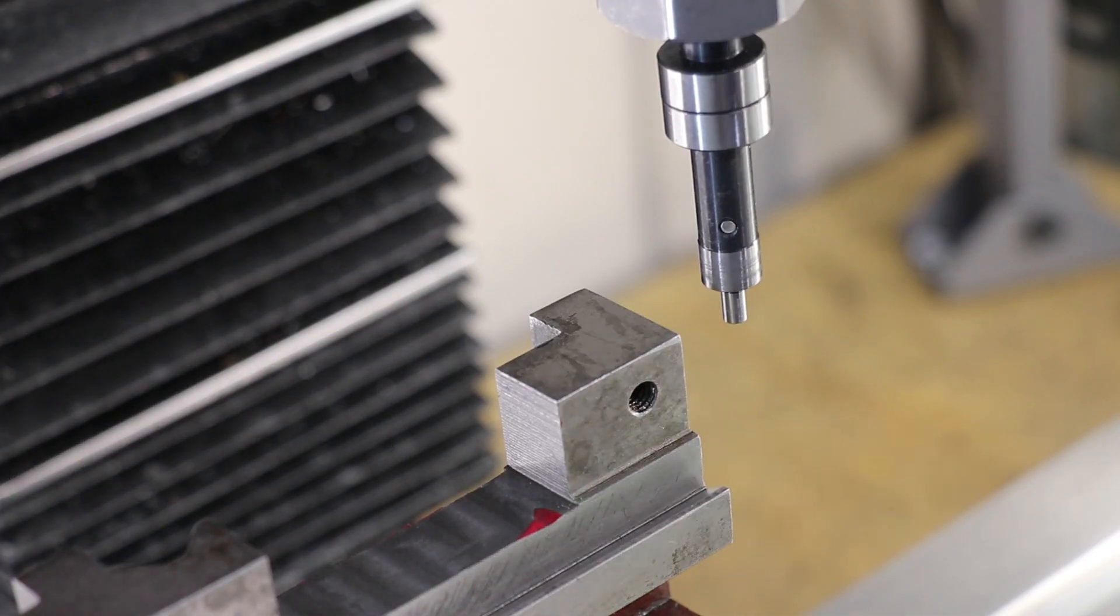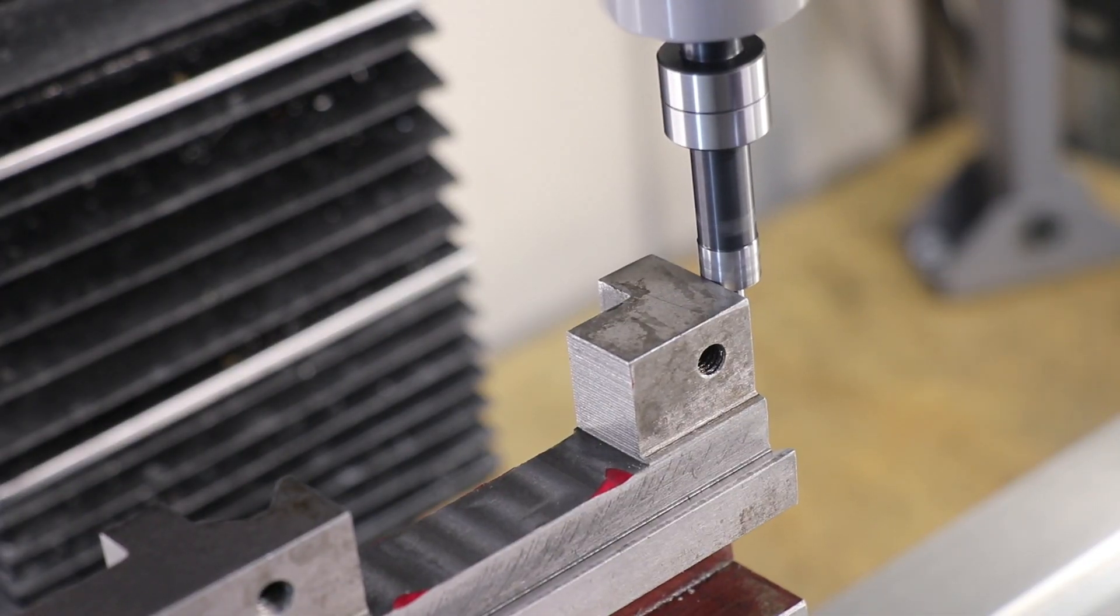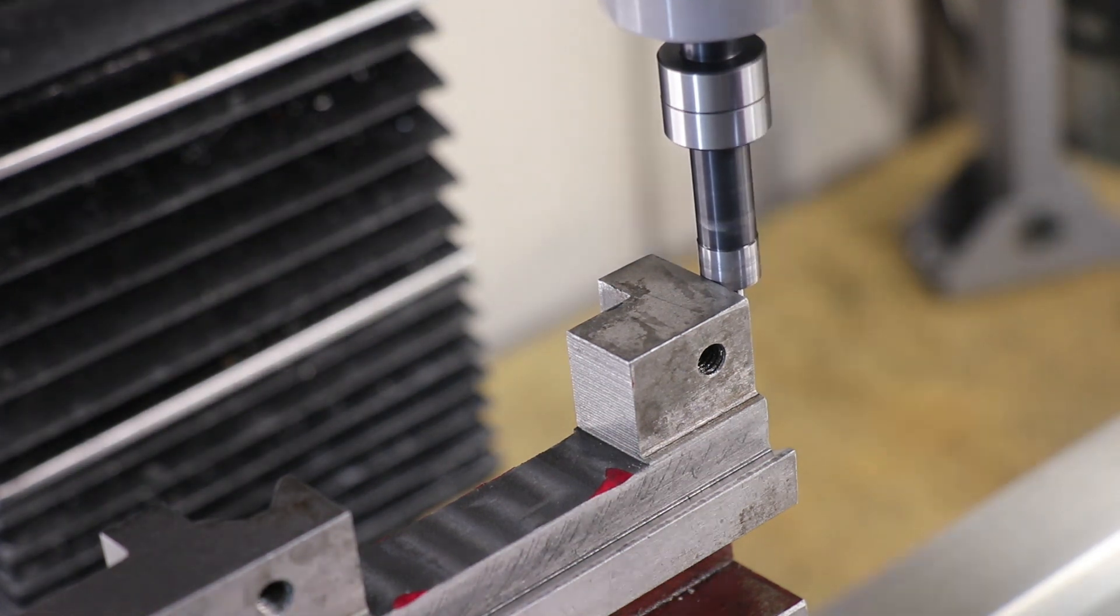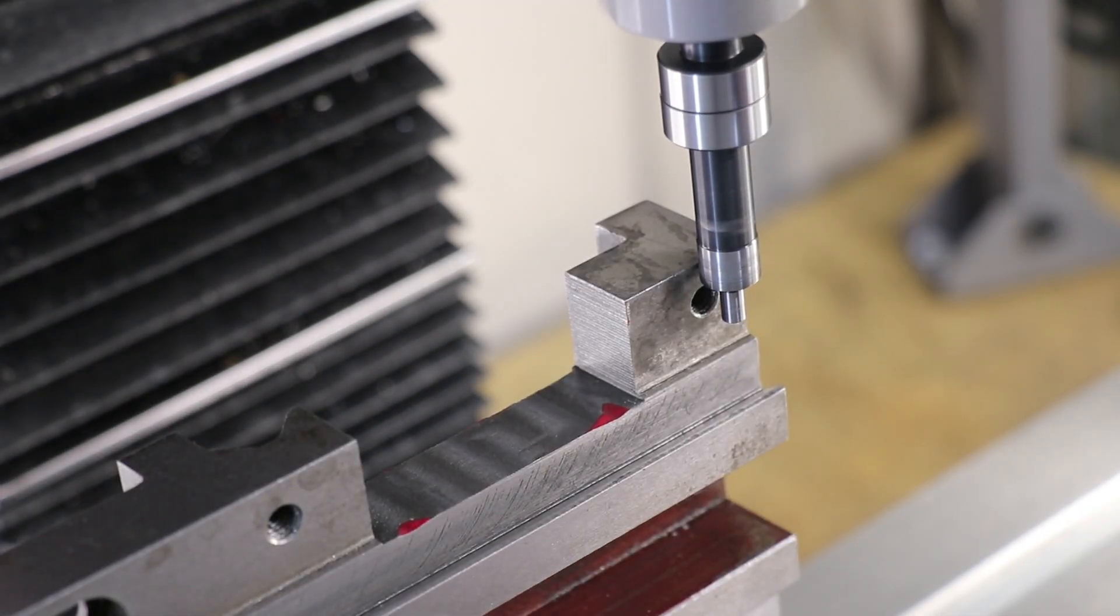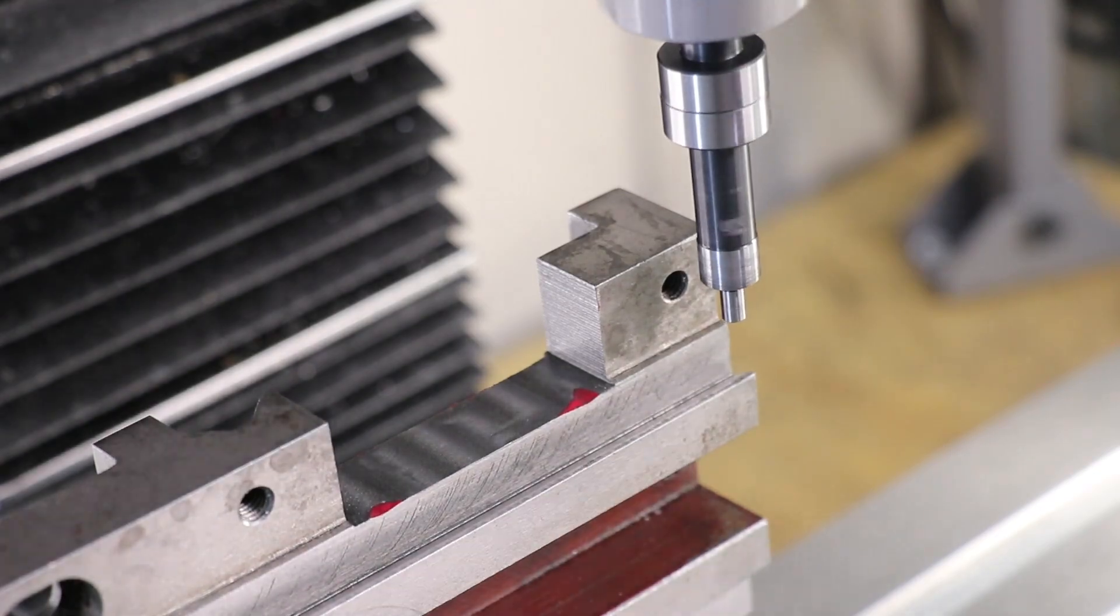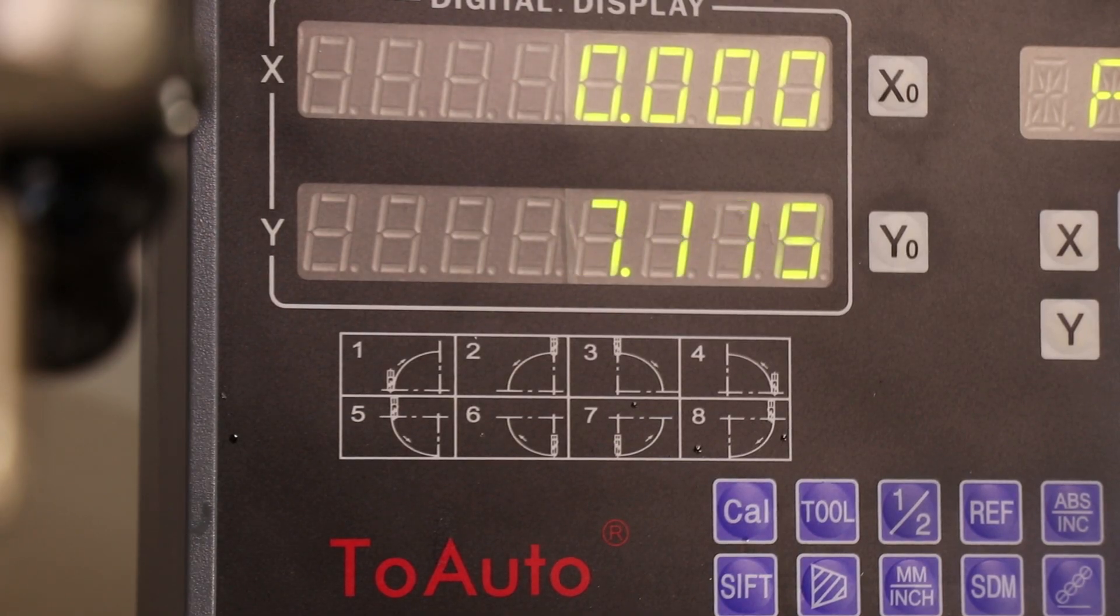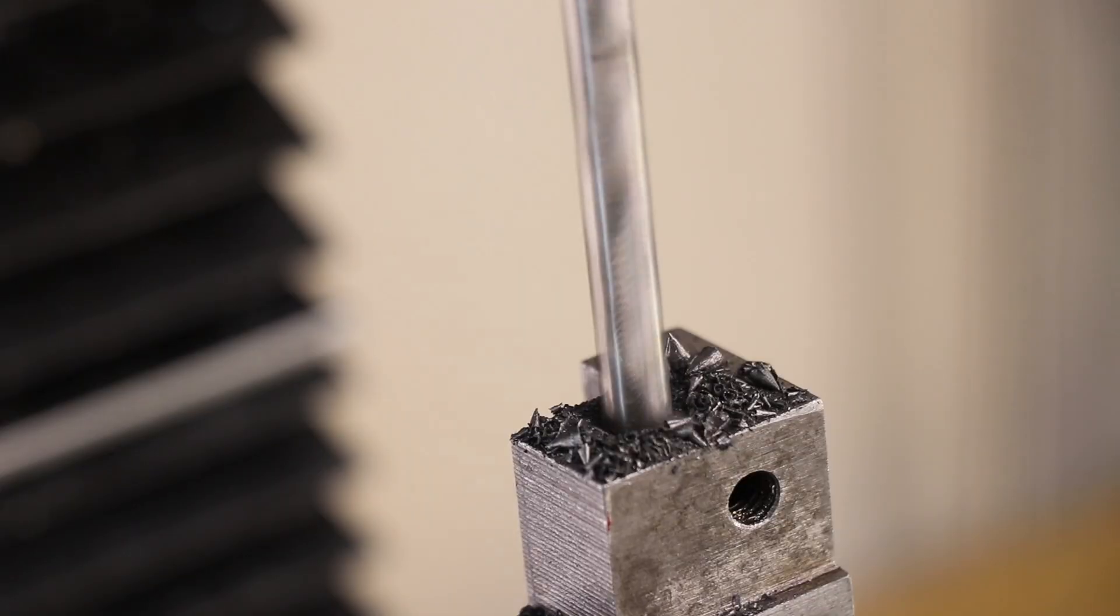Next, I'll drill the holes for the bolts. I'll drill the holes in the carriage first, and then I can replicate it in the bracket. I'll find the edge with the edge finder, and then I'll write down the hole locations, so I can replicate it later.